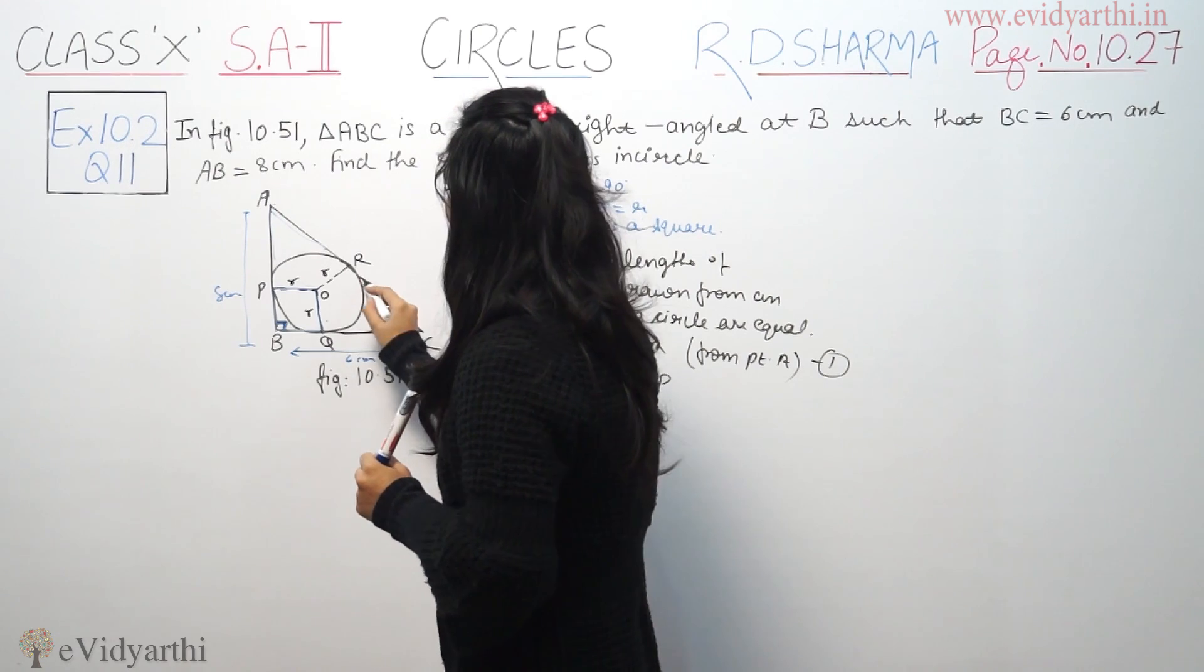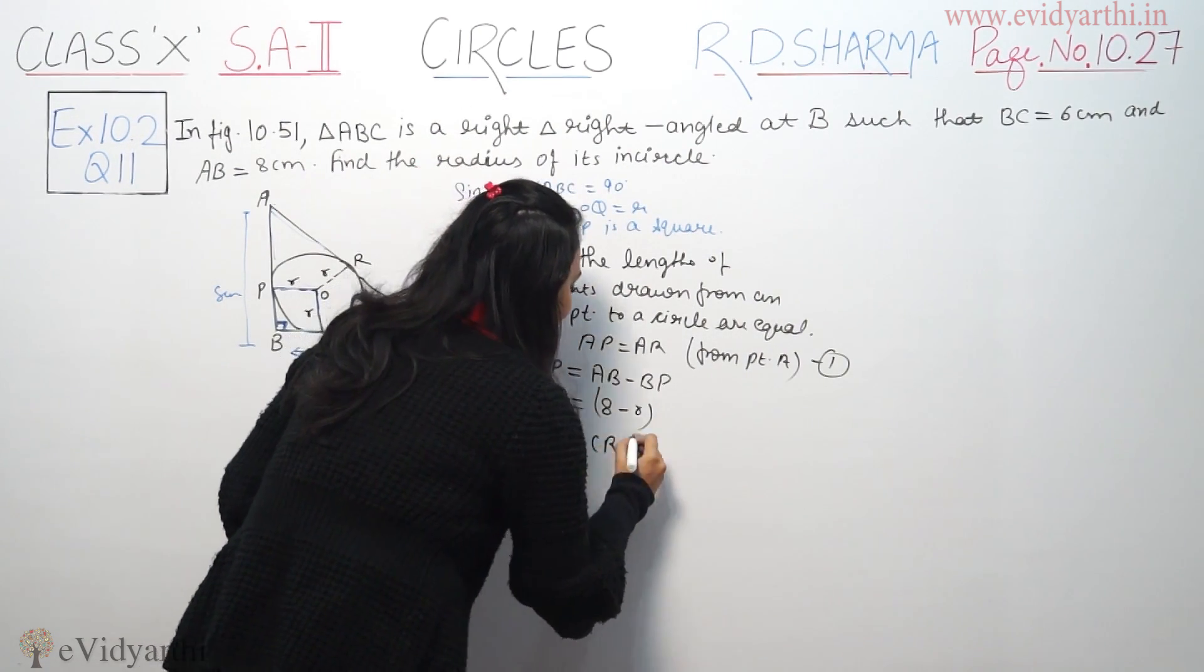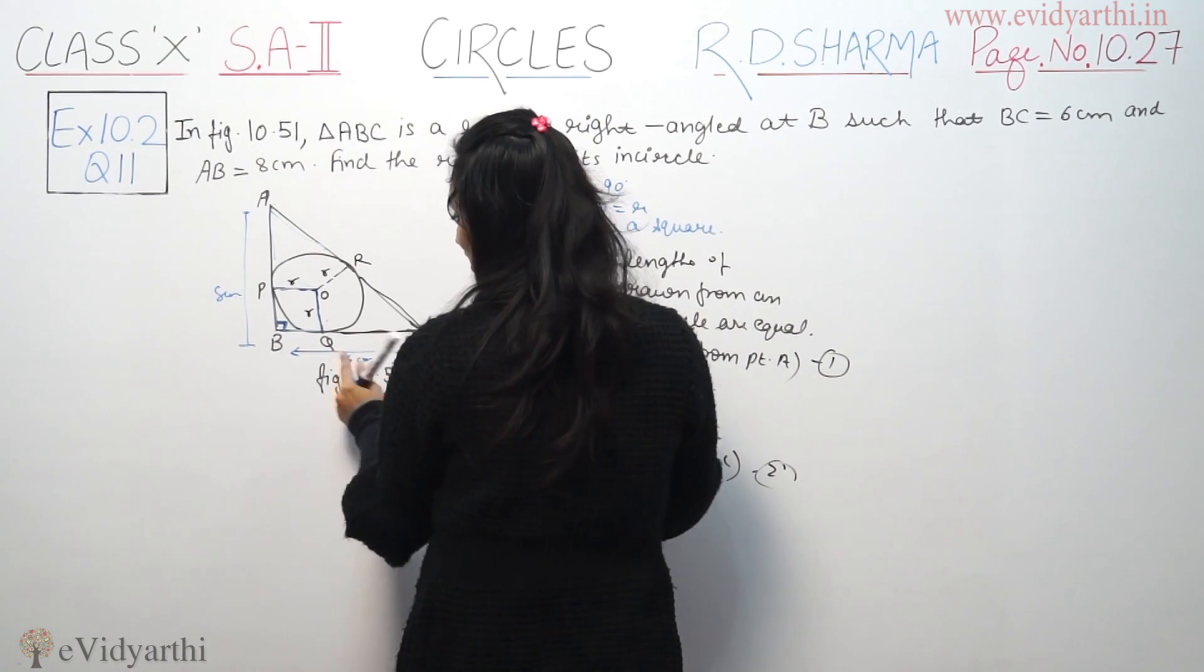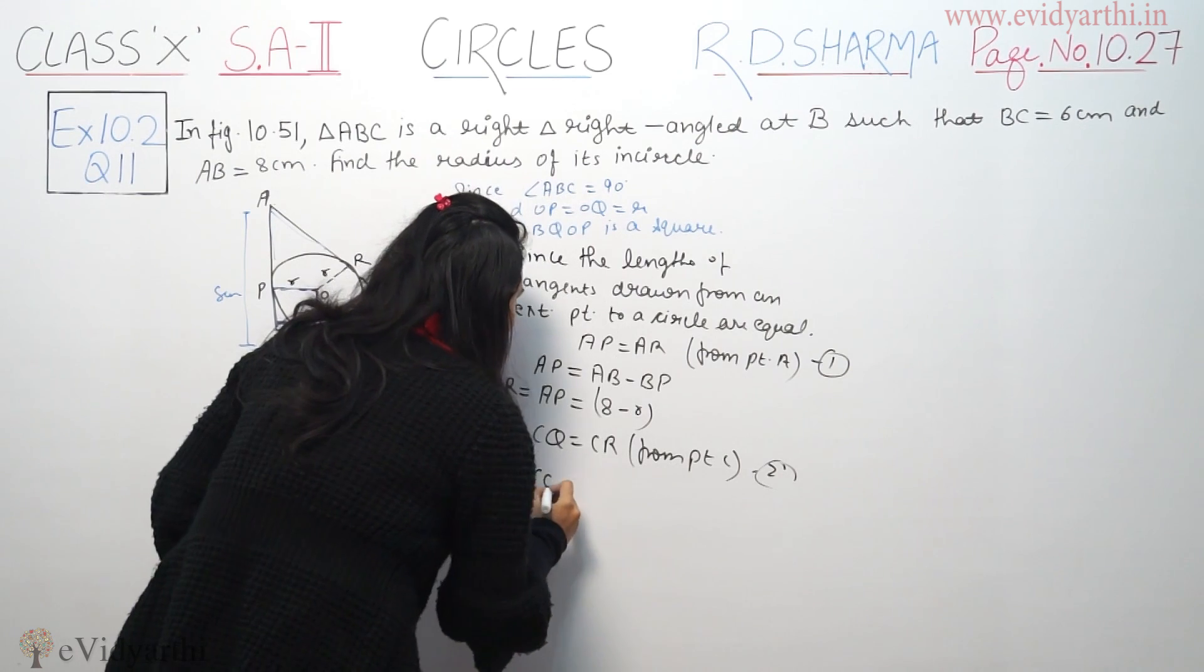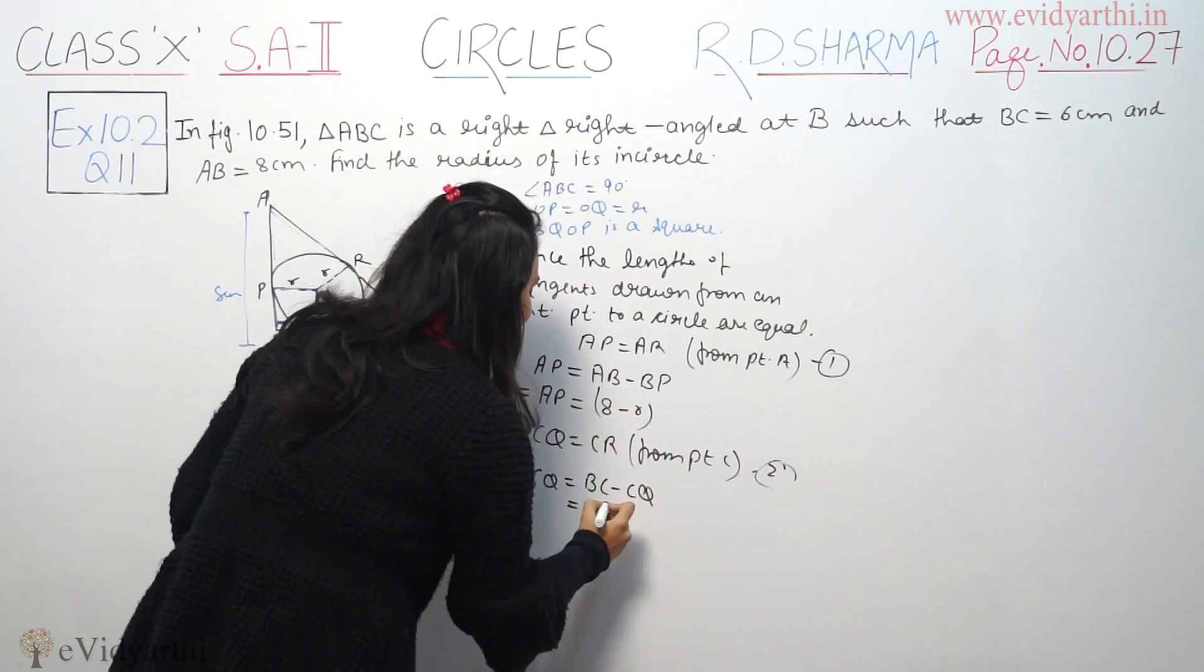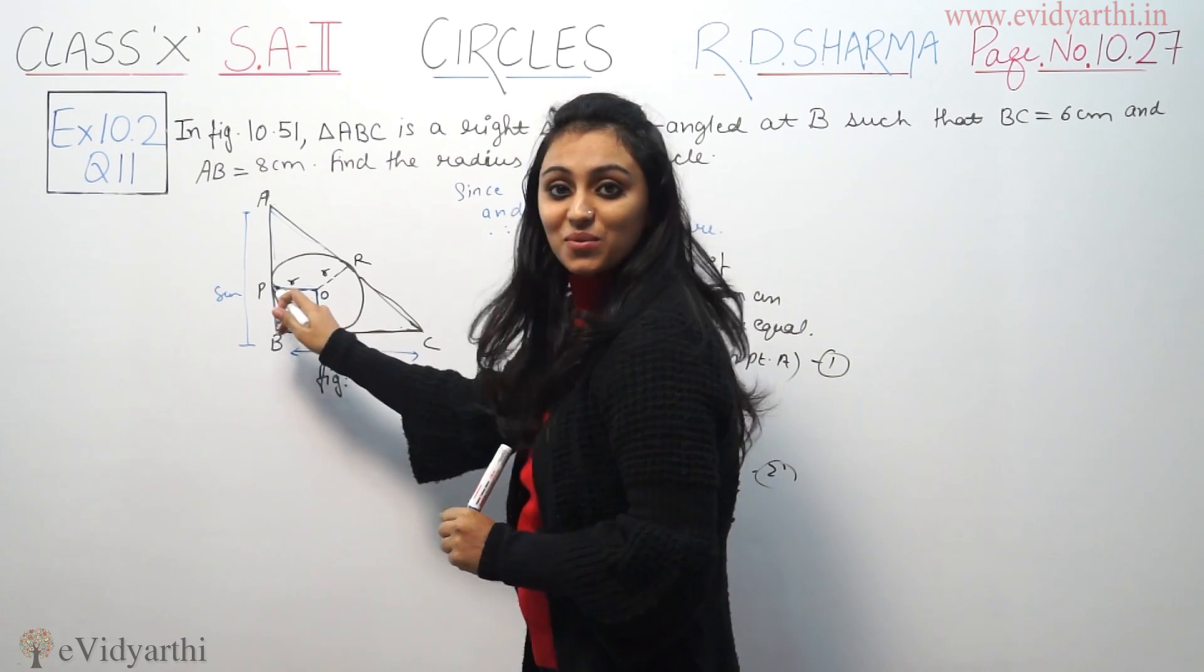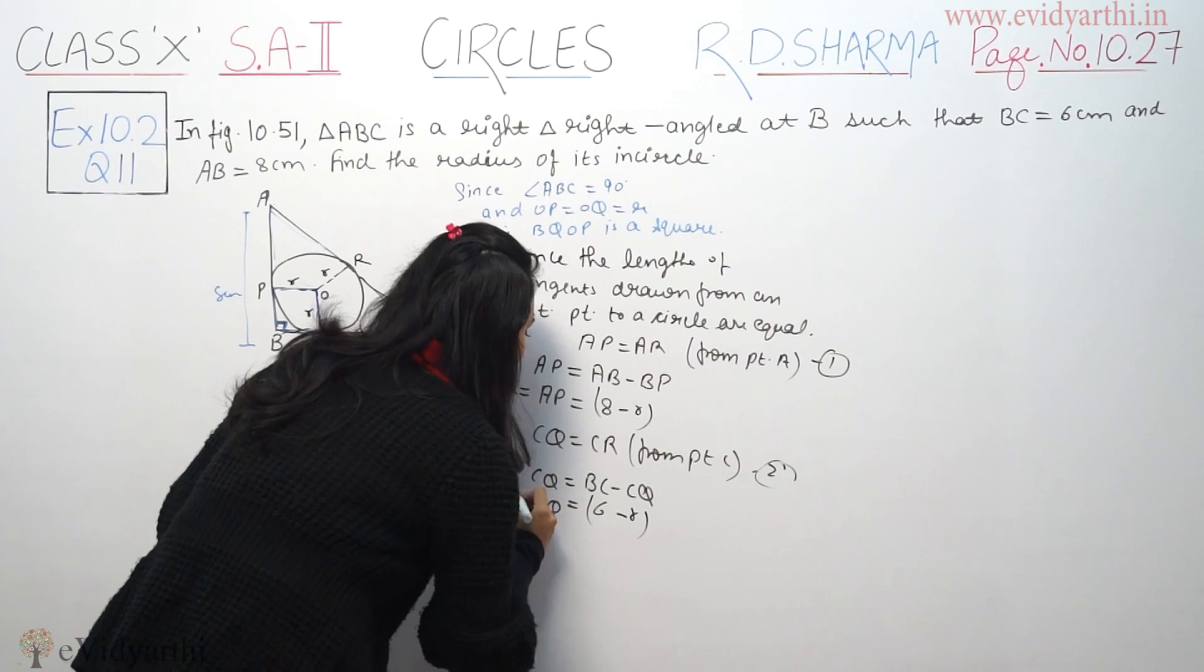AP is equal to AR and that means CR. Now same radius, we have. Now we have external point C. CQ equal to CR from point C. Now if we have BQ, BQ is BC minus CQ. BC is given as 6, and BQ is equal to r. So 6 minus r, CQ is equal to CR.